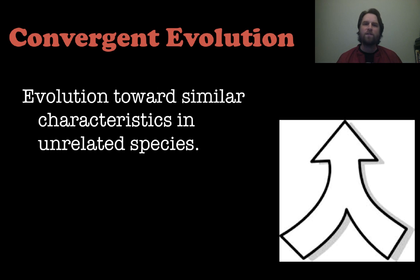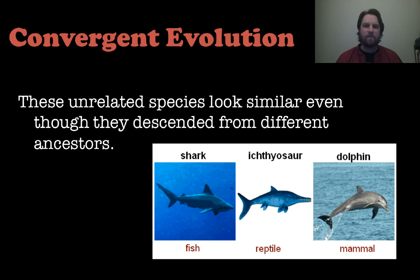Convergent evolution is evolution towards similar characteristics in completely unrelated species. If we look at a shark, an ichthyosaur, and a dolphin, they all evolved similar characteristics like fins and tails, which helped them swim better, although they descended from different ancestors. A shark came from a fish, an ichthyosaur came from a reptile, and dolphins came from mammals.